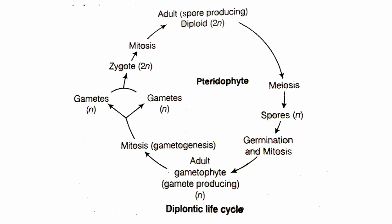Let's check the diagrammatic representation of the diplontic life cycle. The adult diploid sporophyte (2n) undergoes meiosis to form spores. These spores germinate and undergo mitosis to form the adult gametophyte, which produces haploid gametes by gametogenesis. These gametes fuse to form a zygote, which undergoes mitosis to form an embryo. The embryo then germinates into a new diplontic sporophytic plant. Let's check this diagram carefully for better understanding.